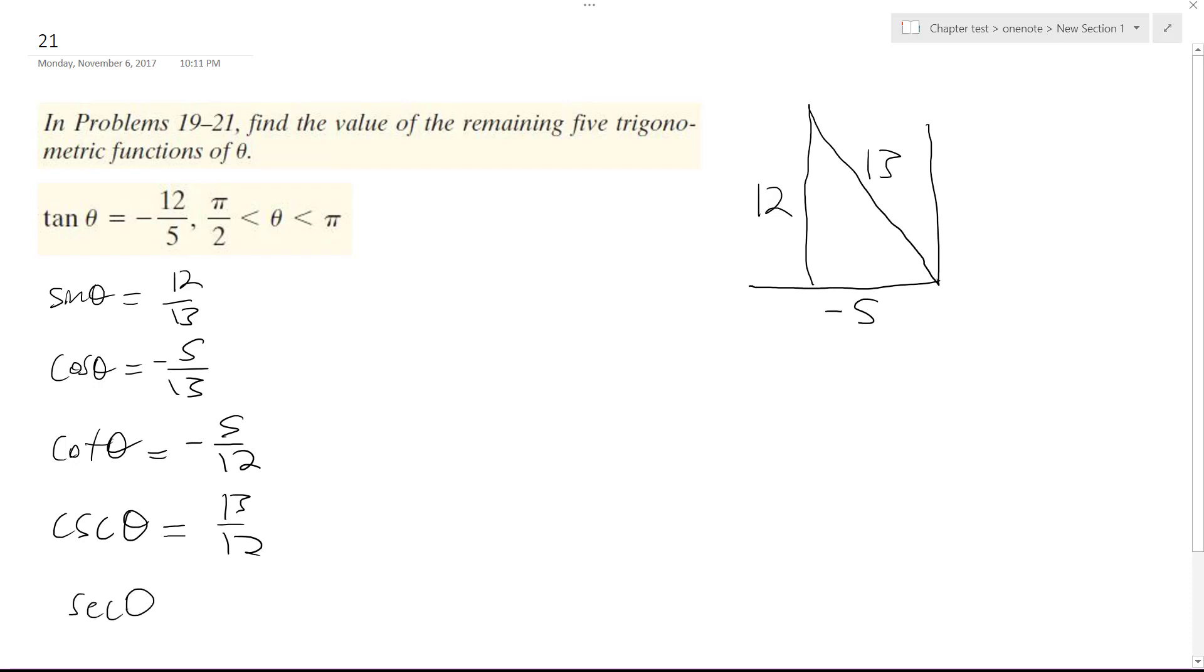And then secant theta, 1 over the cosine, is going to be equal to negative 13 over 5.